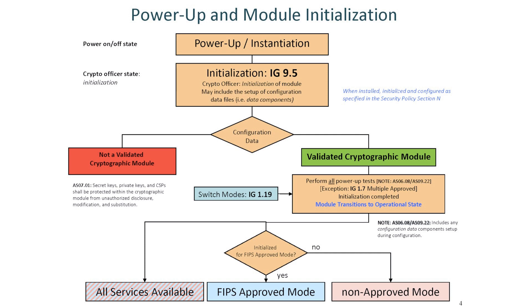As shown at the bottom of the diagram, a validated crypto module may operate in three different ways. The first option is that the module is designed to operate in a mixed mode of operation, meaning that both FIPS approved and non-FIPS approved services are available to the operator. In this scenario, there is generally no mechanism implemented in the module which is capable of enforcing the mode. The operator must pay particular attention to the security policy to determine what services will cause the module to operate in an approved mode and which will cause it to operate in a non-approved mode.